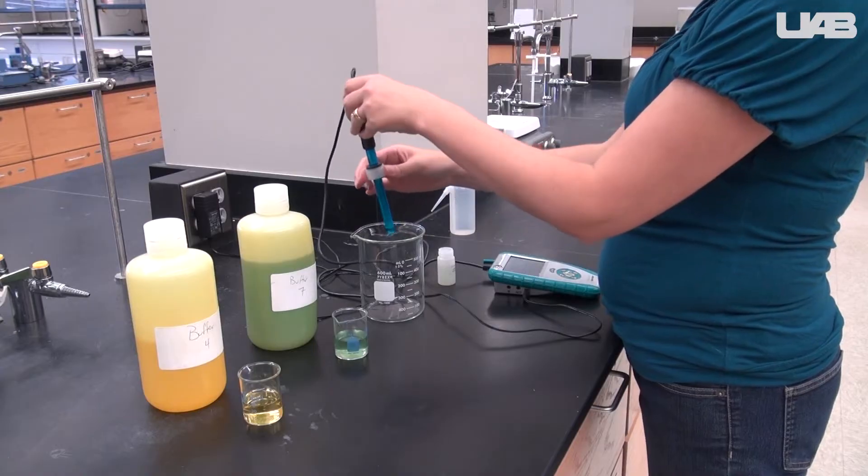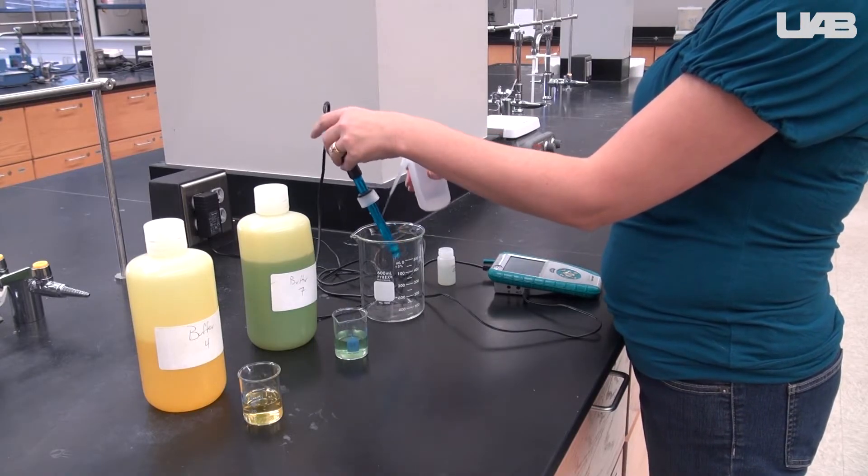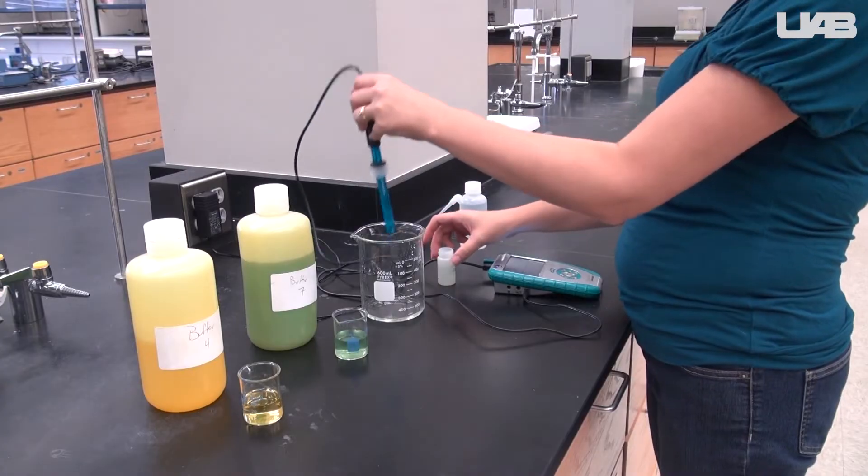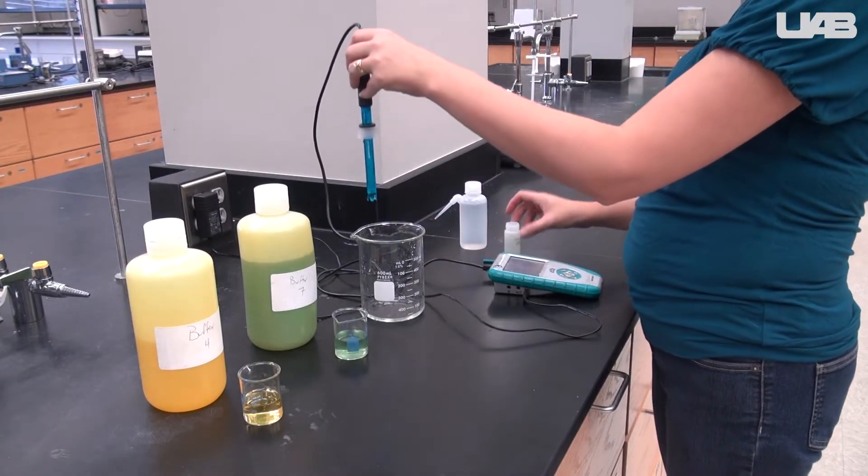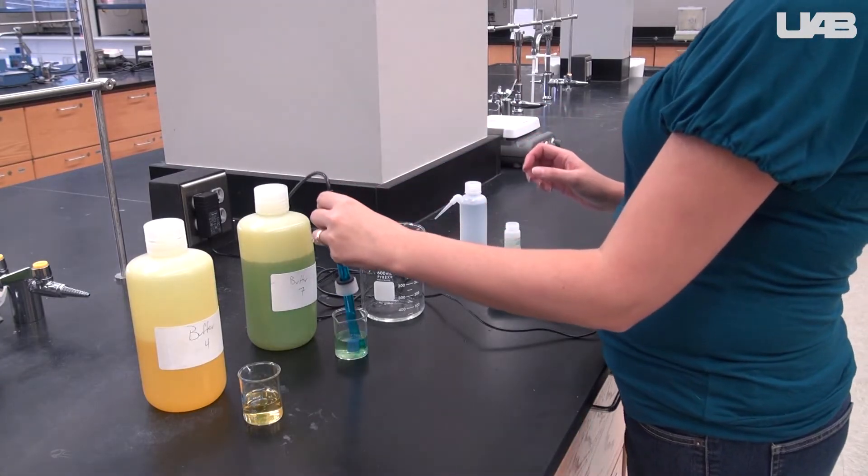Rinse the pH meter off using your wash bottle as you hold it over the waste beaker. Give it a gentle shake to dislodge some of the water droplets and place the probe in the pH 7 buffer.